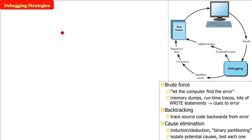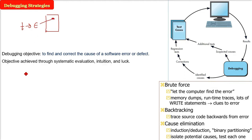There are certain strategies for debugging. What is the objective of debugging? It all starts with testing. Testing uncovers errors. So first we have to locate the error and then we have to fix the error. The objective is to find and correct the cause of the software error or defect.